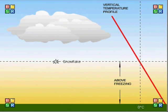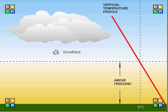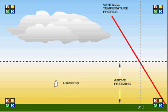The vertical temperature profile for rain increases in temperature linearly, eventually reaching the above freezing layer at approximately 1700 meters. The snow is able to melt, and the resulting water droplets land on the ground as rain.